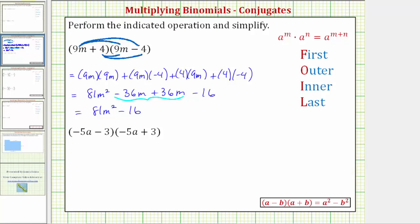Looking at our second example, again, to find this product, we'll multiply like we normally do, so we'll distribute the terms in the first binomial into the second binomial. So we have one, two, three, four products.